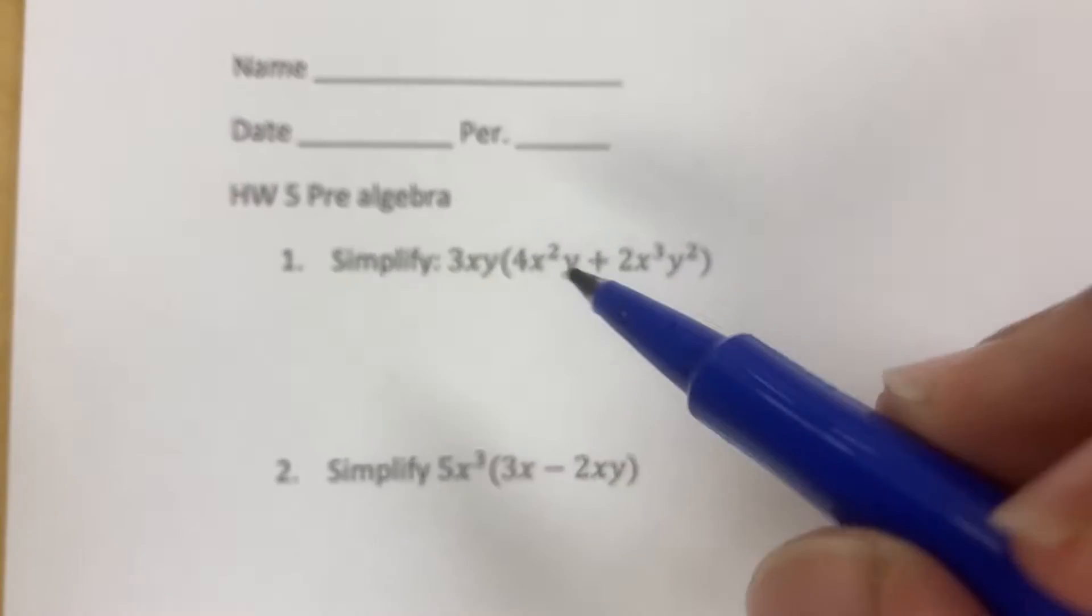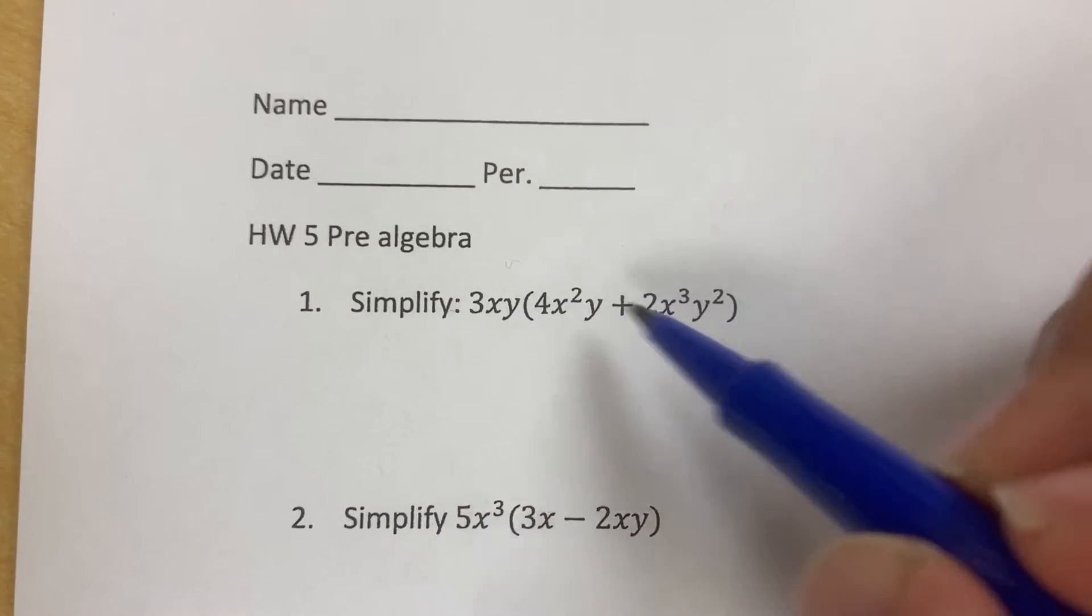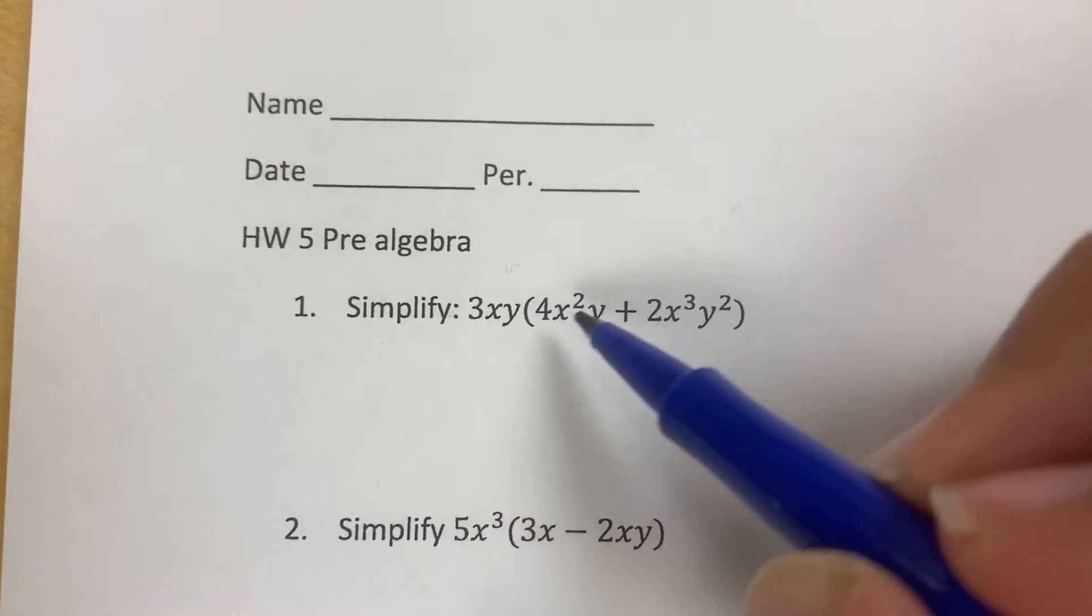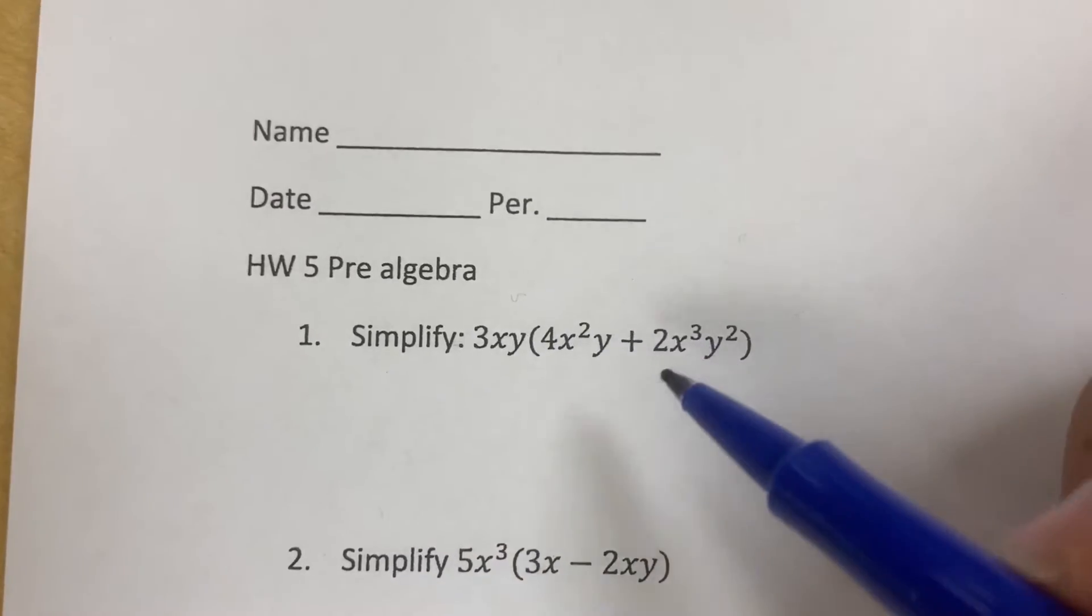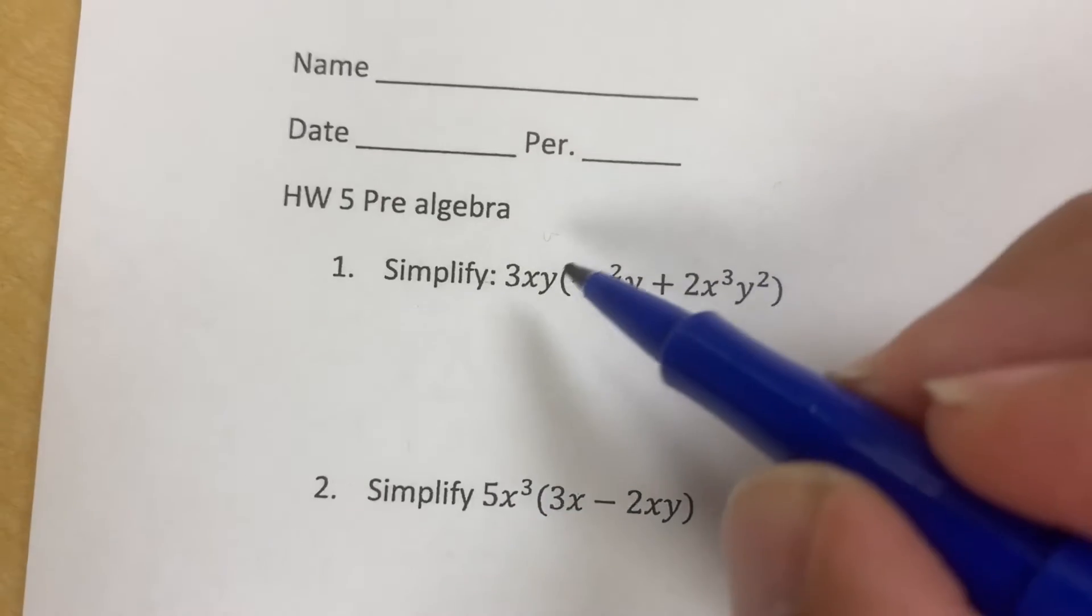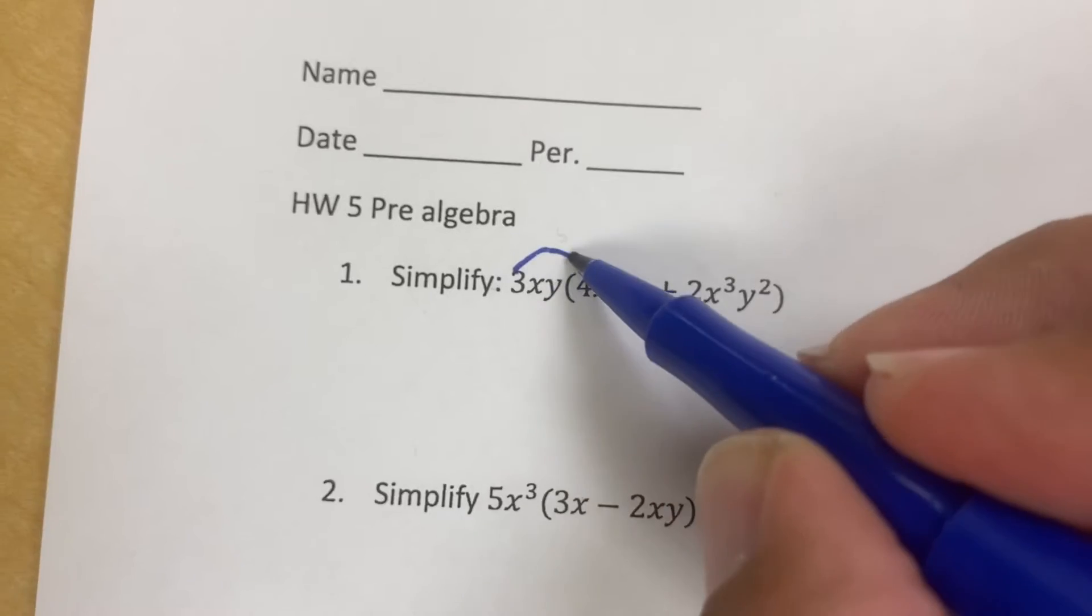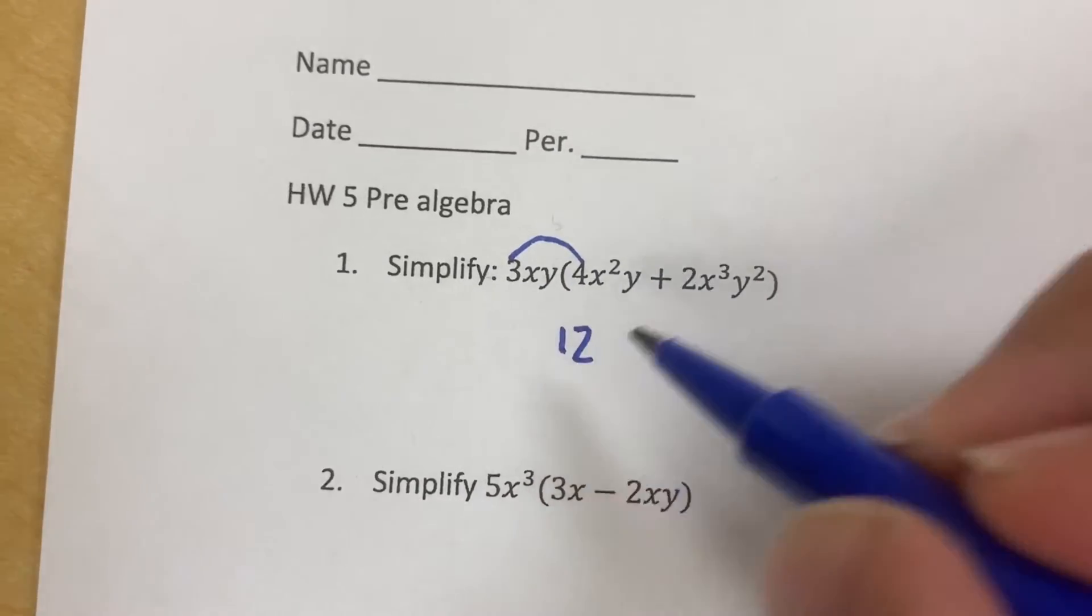So for the first one, the 3 is going to multiply with every single number that's in the front. So the whole numbers in the front are going to all multiply with each other. So you're distributing the 3xy to everything. So the 3 goes first, 3 times the 4, so 3 times the 4, that's going to give us a 12.